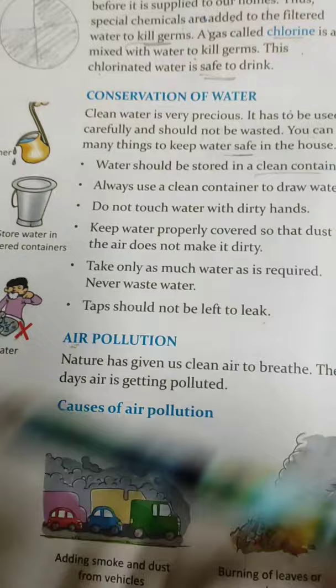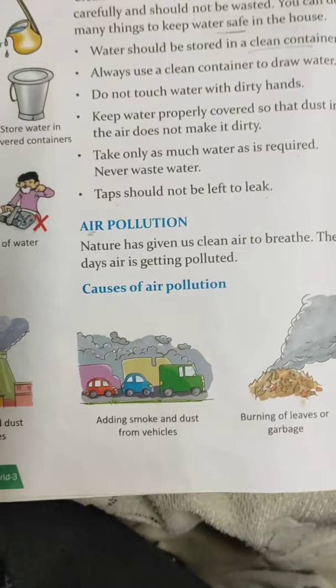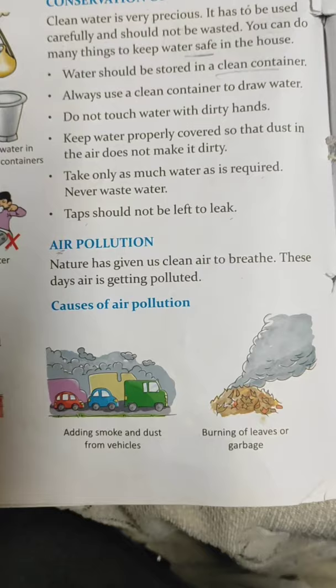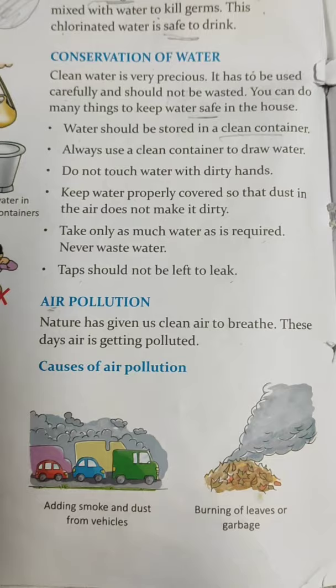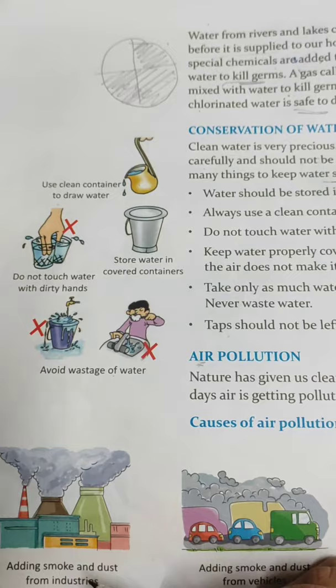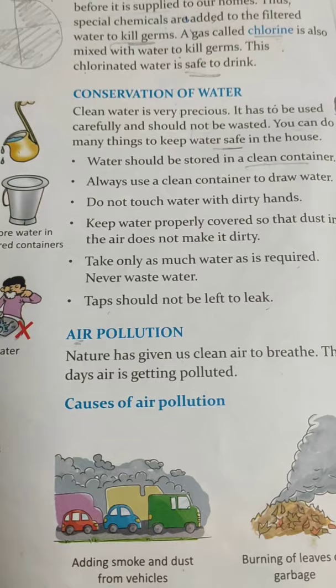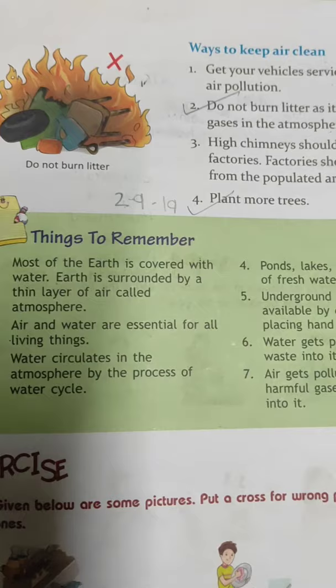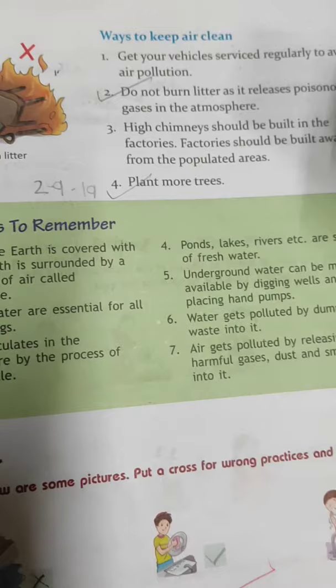The next topic is air pollution. These days you hear from parents and see in newspapers that the AQI — Air Quality Index — is very high. We are installing air purifiers at home so that the air we breathe is clean. What is causing air pollution? Smoke from industries, smoke and dust from vehicles, and burning of leaves and litter. For example, in winter people burn fires for warmth — although that fire provides heat, it also pollutes the air.